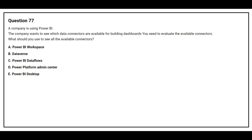Question number 77. A company is using Power BI. The company wants to see which data connectors are available for building dashboards. You need to evaluate the available connectors. What should you use to see all the available connectors? Option A: Power BI workspace, Option B: Dataverse, Option C: Power BI data flow, Option D: Power Platform admin center, Option E: Power BI Desktop. The correct answer is option E, Power BI Desktop.